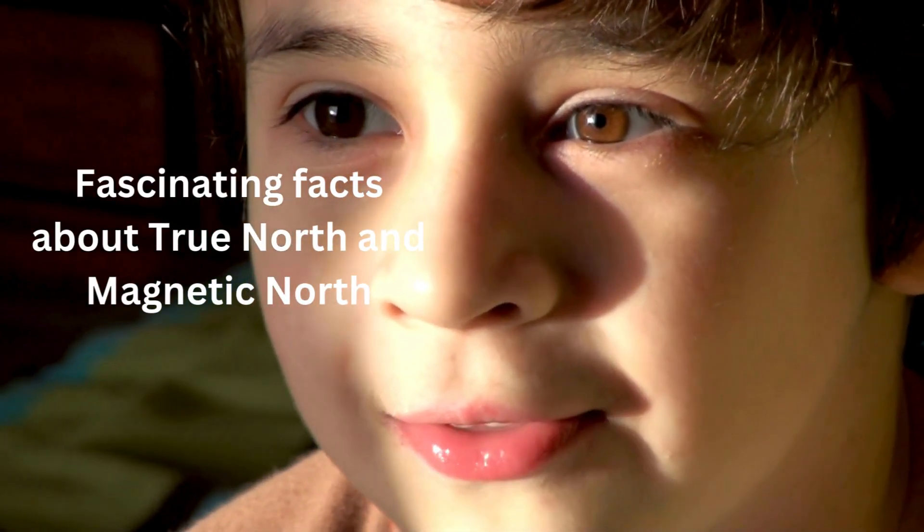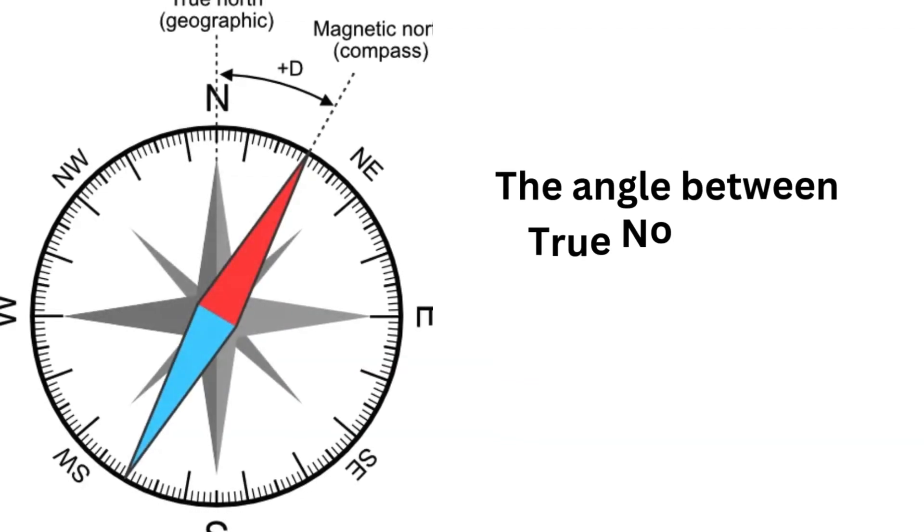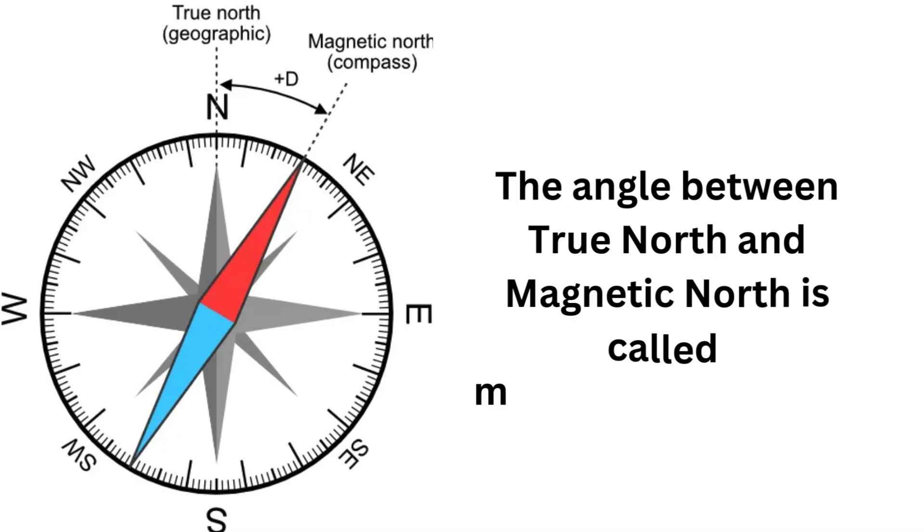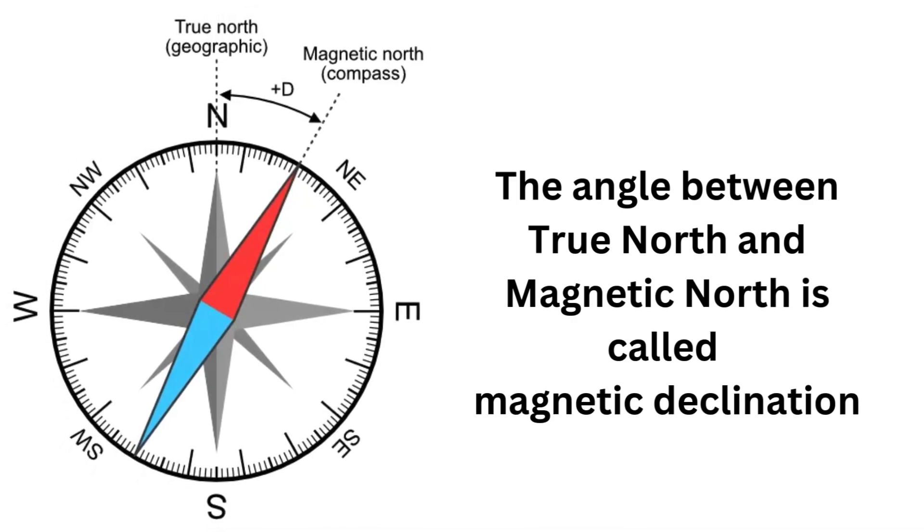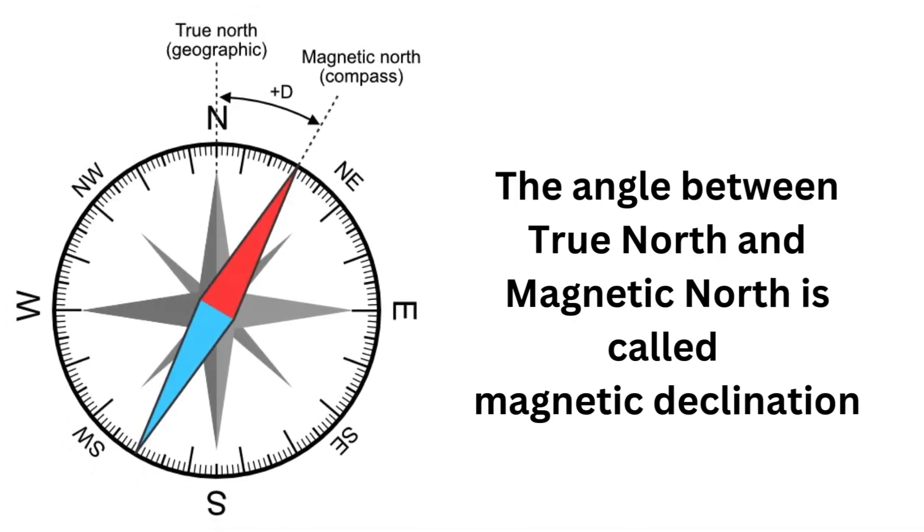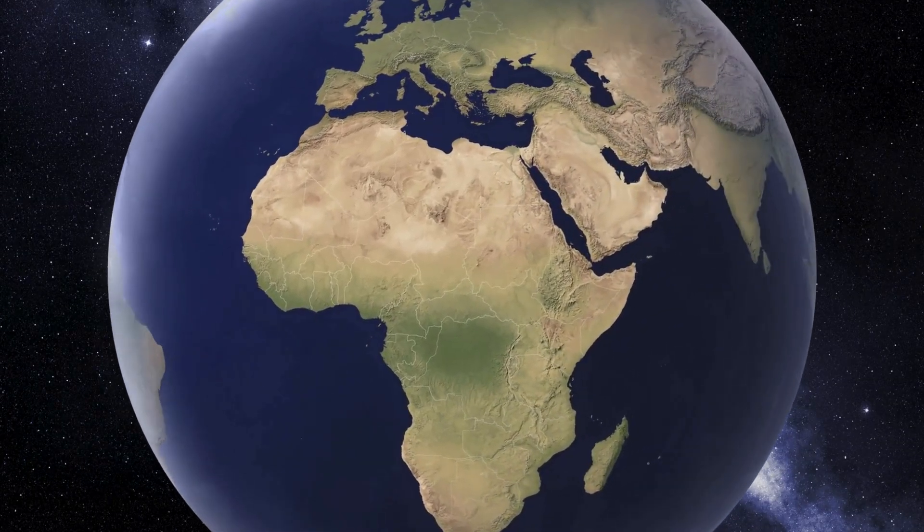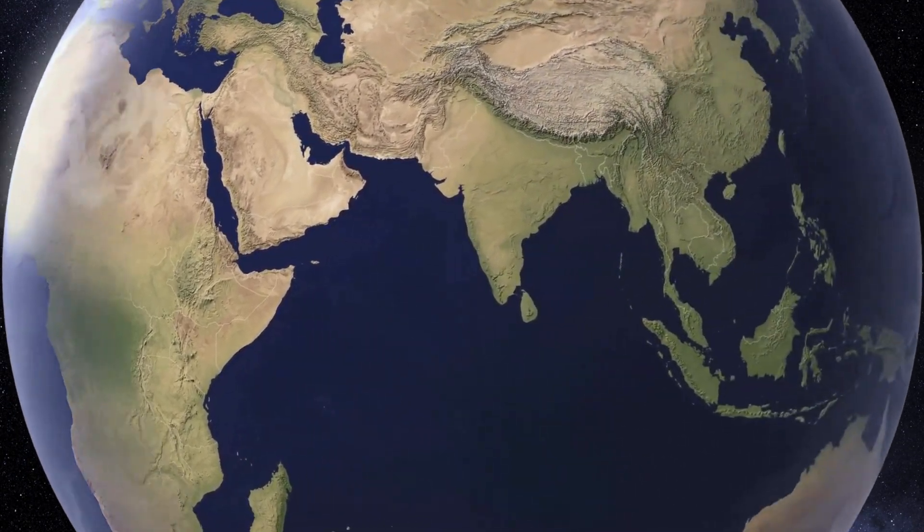The magnetic declination. The angle between true north and magnetic north is called magnetic declination. This angle varies depending on where you are on Earth. In some places, it can be as much as 20 degrees or more.